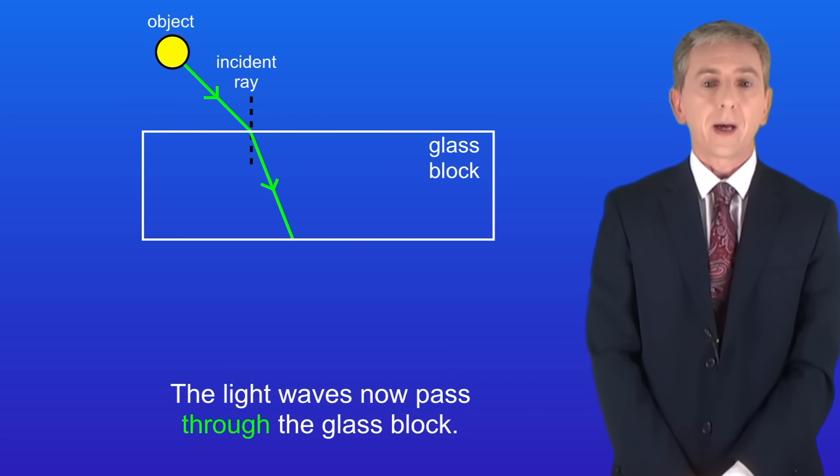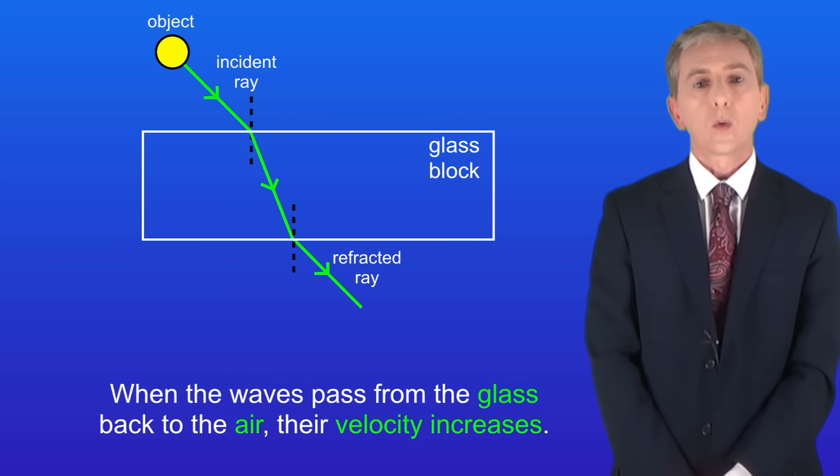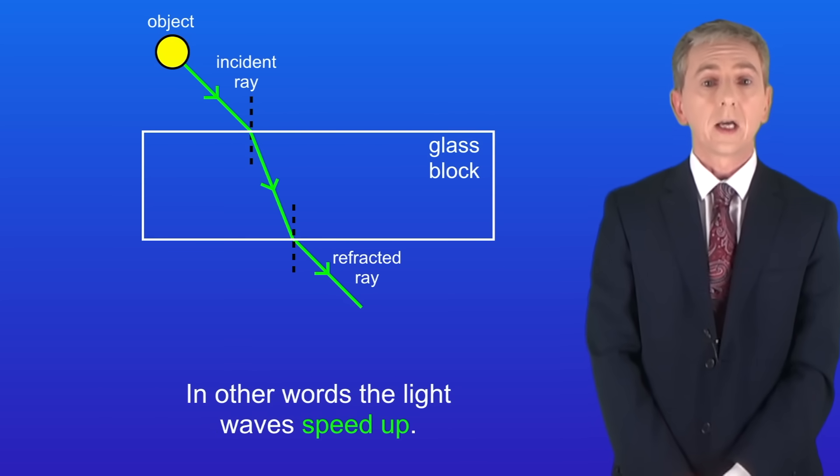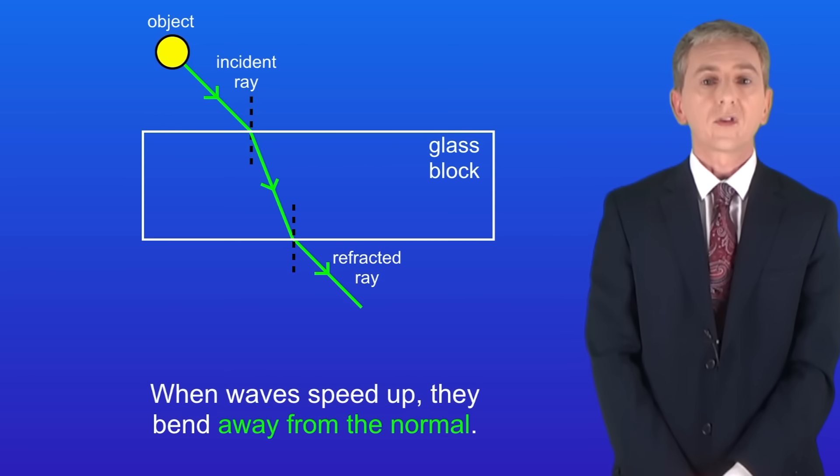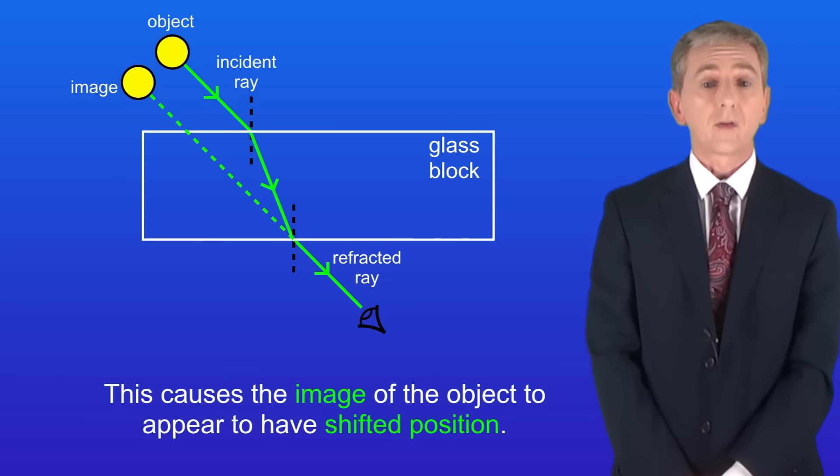The light waves now pass through the glass block. When the waves pass from the glass back to the air their velocity increases. In other words the light waves speed up. When waves speed up they bend away from the normal and we can see that here. Now this causes the image of the object to appear to have shifted position.